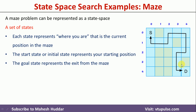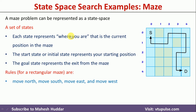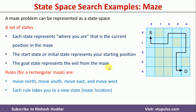The task is to go from the start state to the goal state. To go from start state to goal state we need a set of rules. The set of rules in this case are: move north, move south, move east, move west. These are the rules we can apply so that we can go from the start state to the goal state.